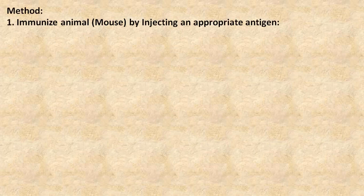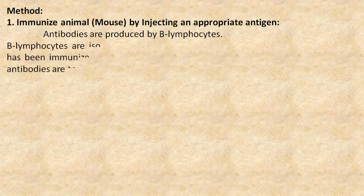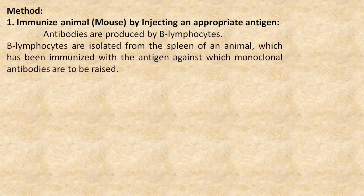Method. The first step is to immunize an animal by injecting an appropriate antigen. Antibodies are produced by B lymphocytes. B lymphocytes are isolated from the spleen of an animal which has been immunized with the antigen against which monoclonal antibodies are to be raised.